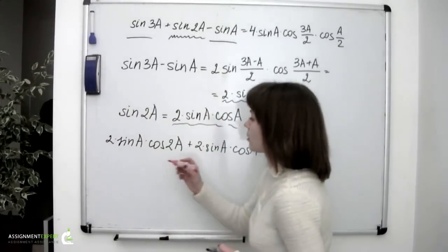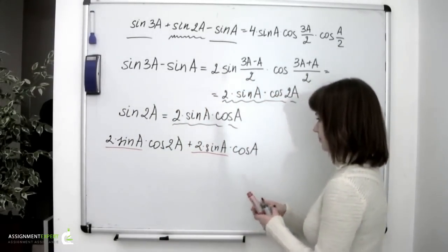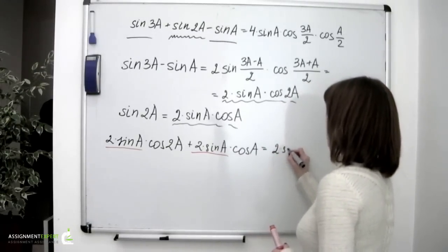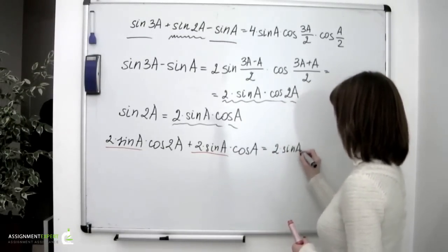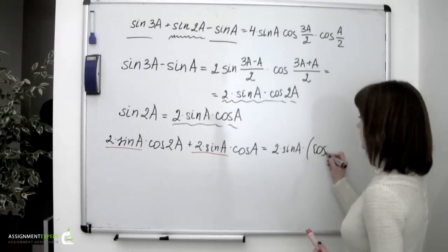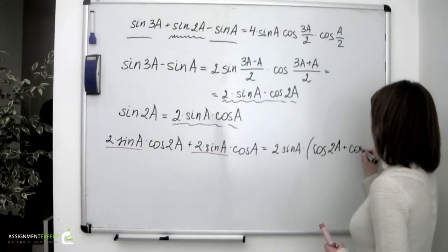Let's now factor out the 2 sin a. So we have 2 times sin a times the sum cos 2a plus cos a.